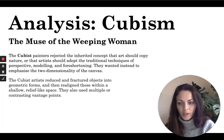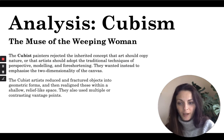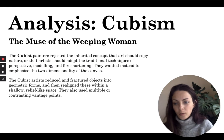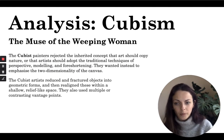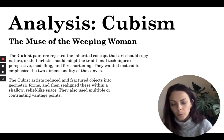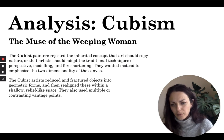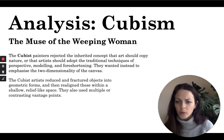Hi Year 9 artists. Today I'm going to talk to you about analysing cubism. Mrs Perry has already introduced the topic, so you'll have an overview that cubist art was a rejection of the inherited concept that art should copy nature — that it should be purely a representation of what we can actually see with our naked eye. Cubist artists were going against the use of traditional techniques of perspective, modelling, and foreshortening.